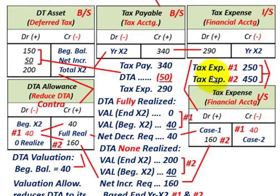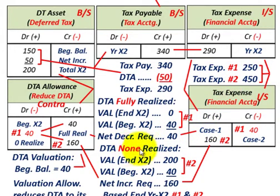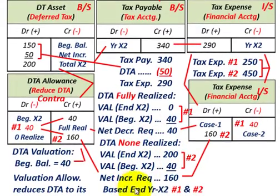So essentially, your total tax expense was sitting at $290,000, but you had to increase it by $160,000, so your tax expense goes up to $450,000 — because you no longer have any deferred tax asset. None of the deferred tax asset would be realized. These numbers are all based on the end of year X2 for both cases.